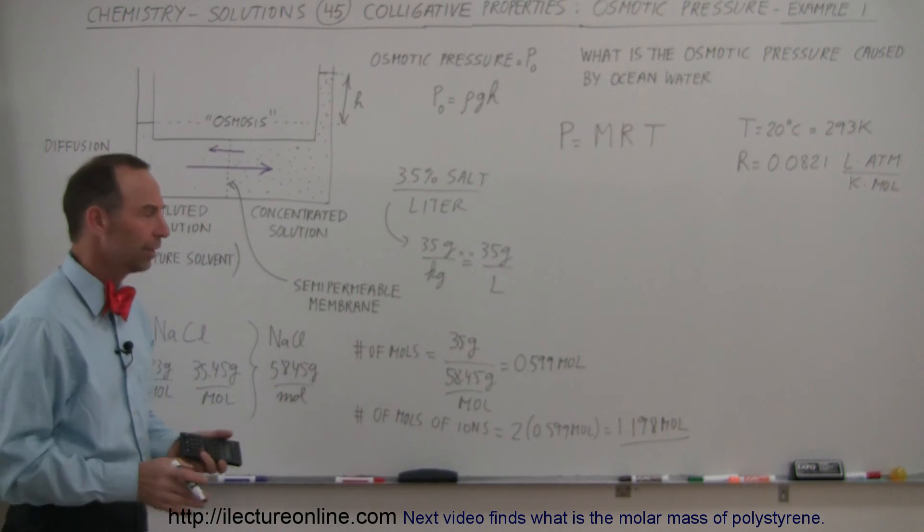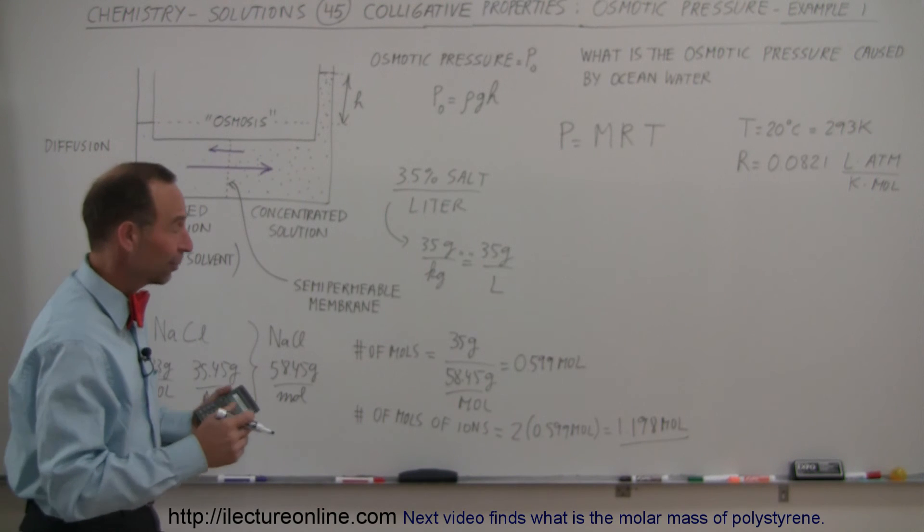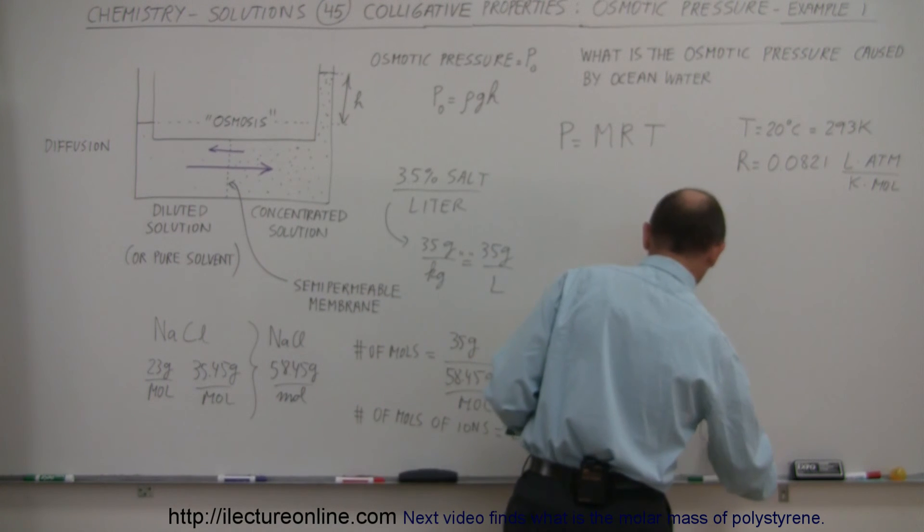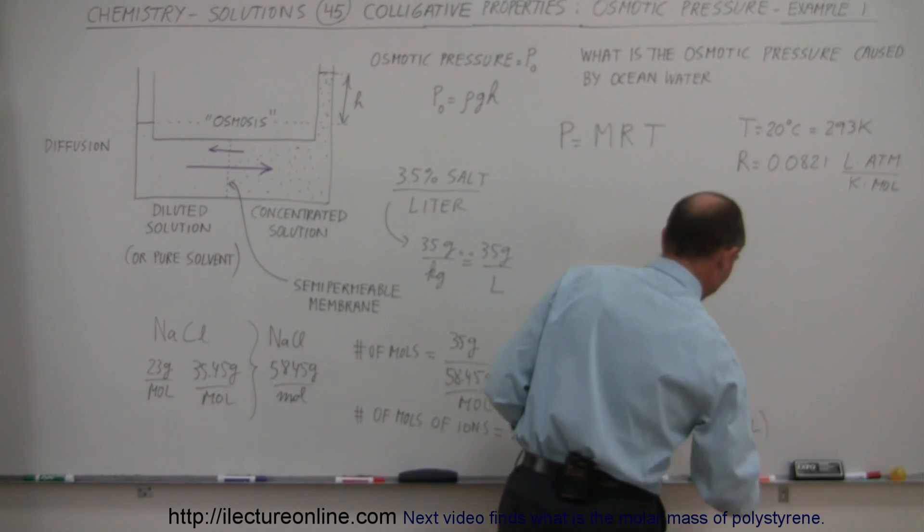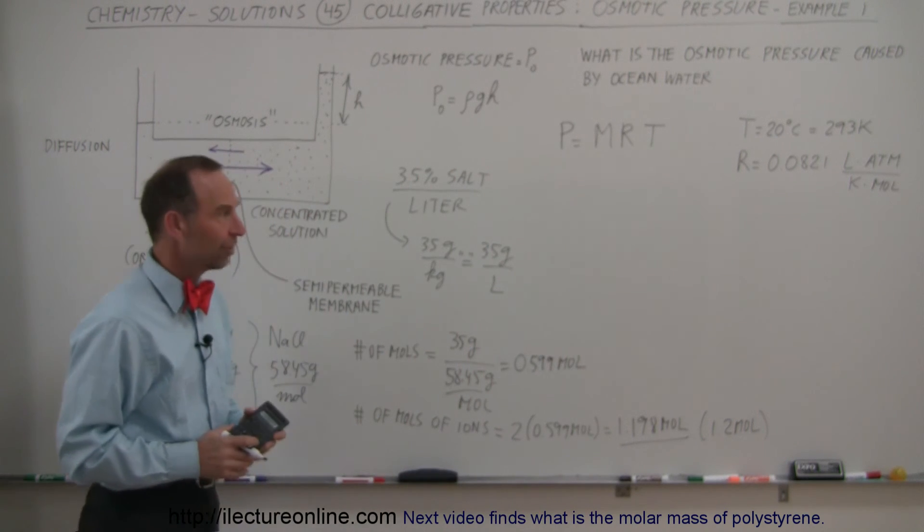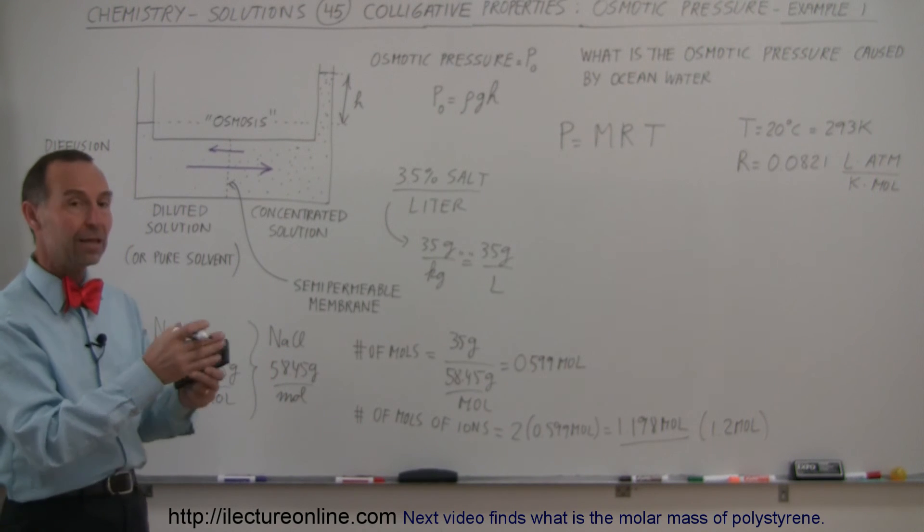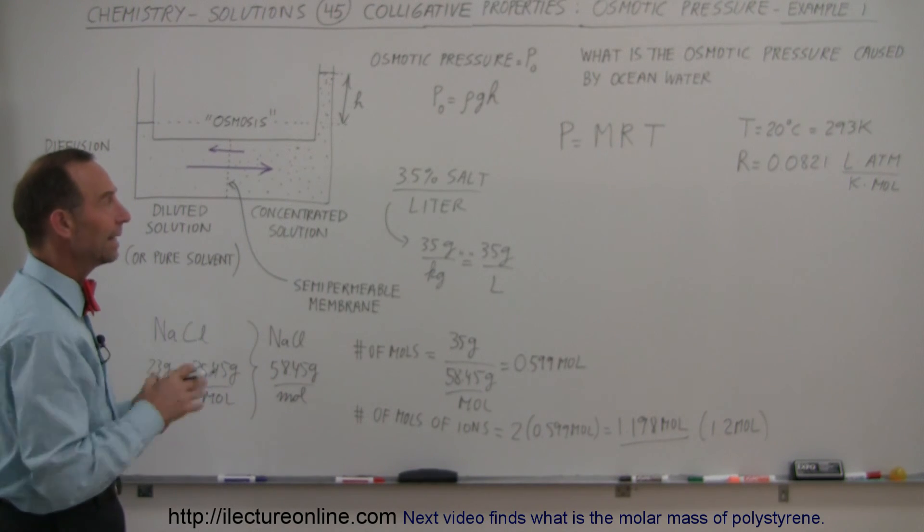And that's a rough number. Obviously, I don't even need to use that many significant figures. We could just round it off and say that's 1.2 moles of ions in seawater, in one liter of seawater. Now that will be the molarity of the solute in the seawater.